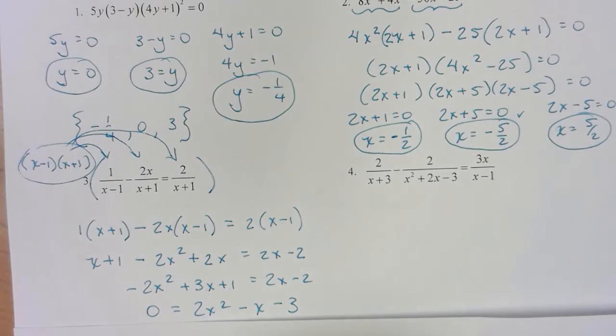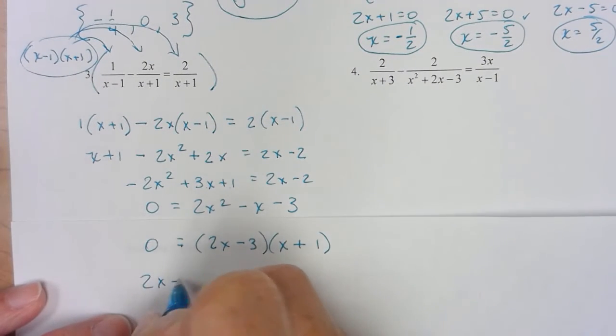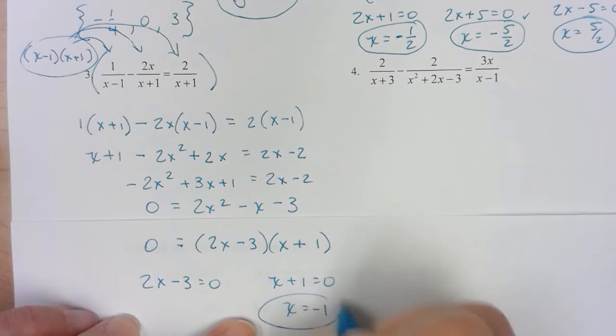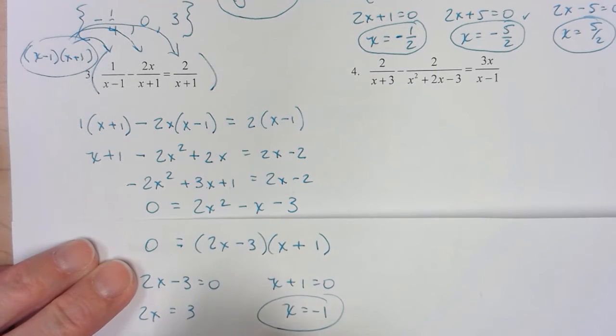So if you did that by trial and error, hopefully you came up with 2x minus 3 and x plus 1. Set those factors individually equal to 0. So those should be my answers.